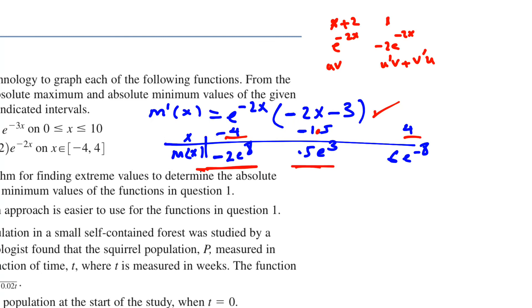The endpoints are -4 and 4, and the critical number is x = -1.5.